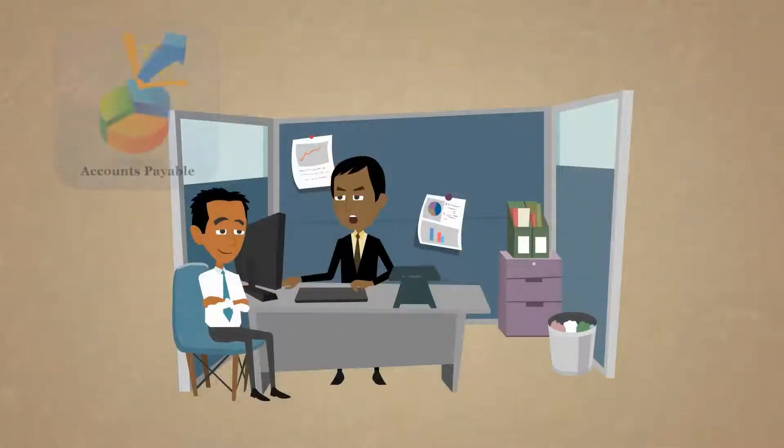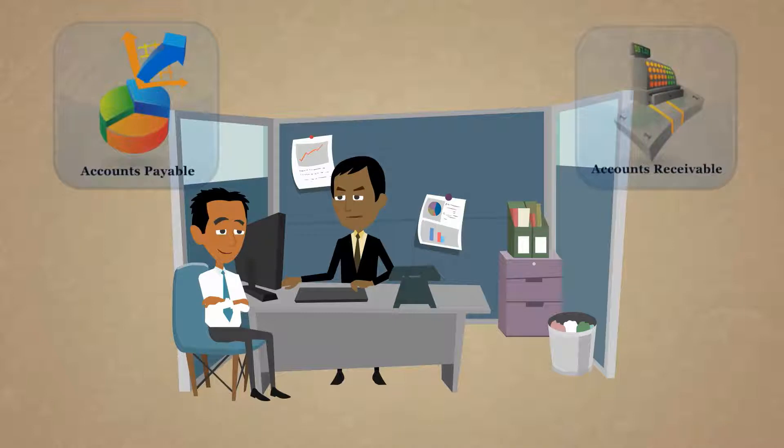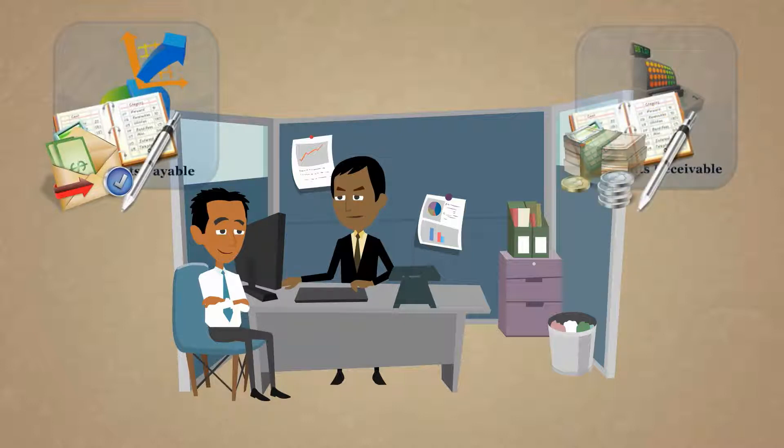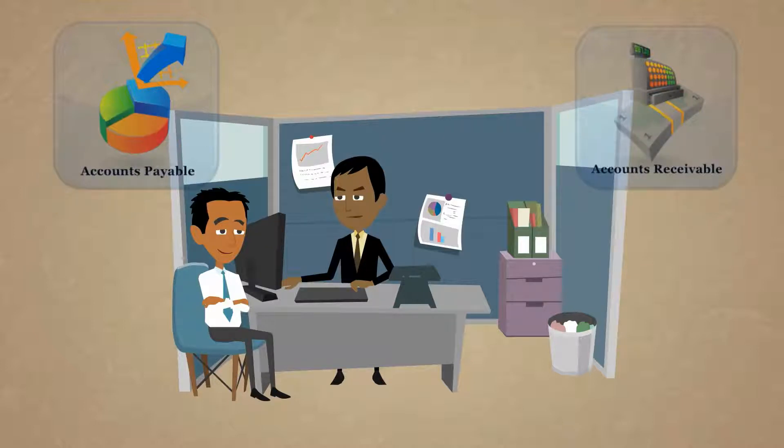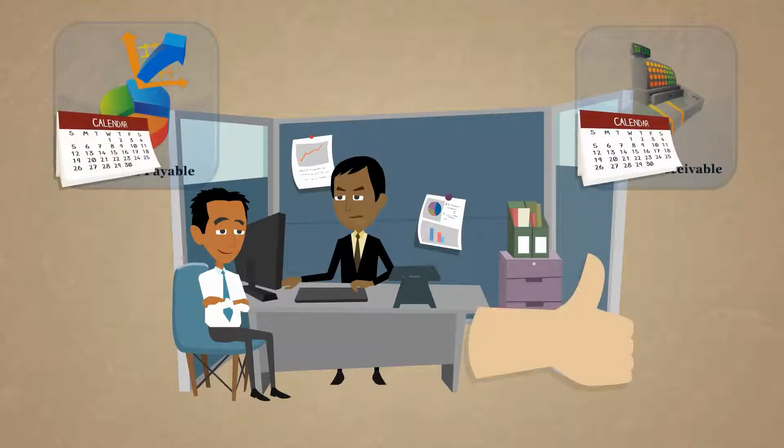Jeremy detailed how accounts payable and receivable worked, explaining that accounts payable is a record of the expenses and liabilities that the business had, and that accounts receivable was a log of all the money owed to the business by clients. He further explained that he should keep track of each account in a journal to ensure good record keeping.